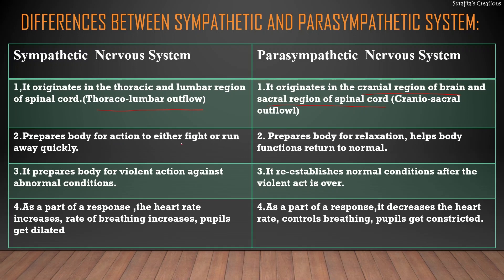The sympathetic nervous system prepares the body for action — either fight or run away quickly — at the time of emergency. The parasympathetic system prepares the body for relaxation and helps body functions return to normal after the emergency situation. The sympathetic nervous system prepares the body for violent actions against abnormal conditions, whereas the parasympathetic nervous system re-establishes normal conditions after the violent act is over, bringing a calming effect.